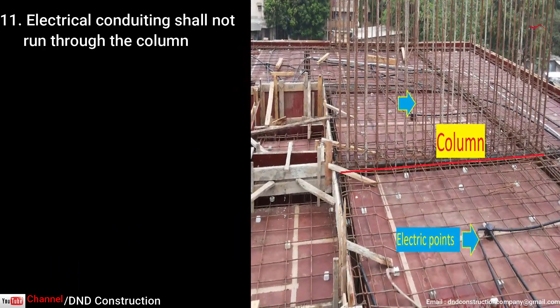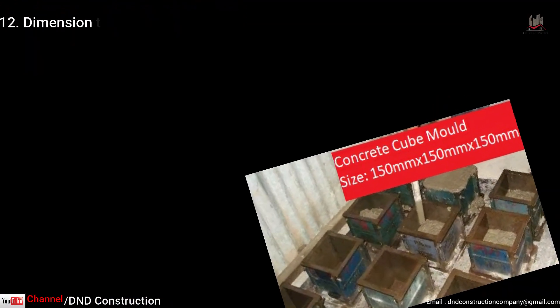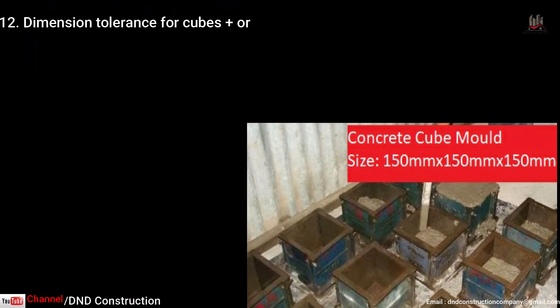Point eleven: electrical conduits should not run through columns, because columns transfer load and if an electrical conduit passes through a column it may weaken it. Point twelve: cube dimension tolerance is plus and minus 2 mm. All concrete cube testing depends on this cube — how we prepare and test it. If the dimension varies, it may affect the strength result.